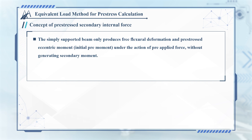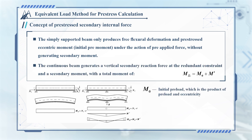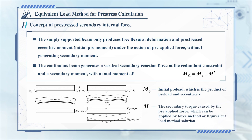A pre-stressed concrete simply supported beam only produces free deflection deformation and a pre-stressed eccentric moment under the action of pre-stressed force, but does not produce secondary moments, as shown in the figure. The continuous beam has redundant constraints that restrict the deformations of the beam body; it not only generates vertical secondary reactions at the redundant constraints, but also generates secondary moments at the beam body, as shown in the figure. Its total moment is expressed by the following formula.